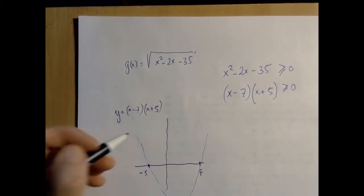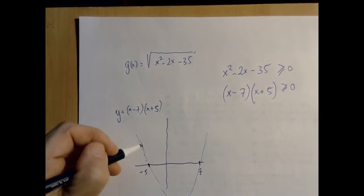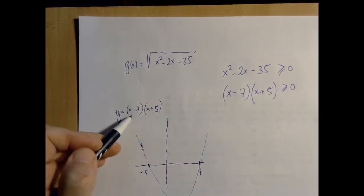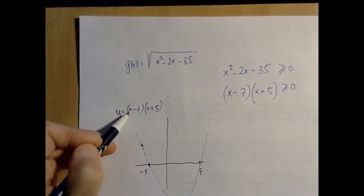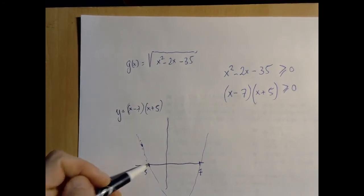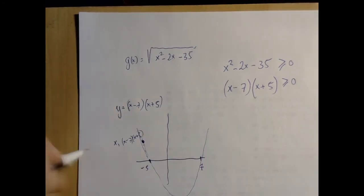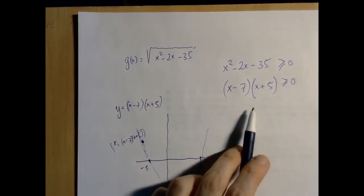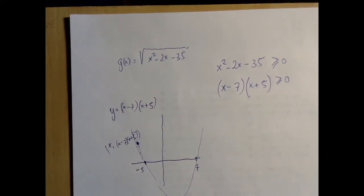And on this graph, for every x, the y coordinate is exactly this. So we're looking for the x values. So on this graph, the y coordinate is the expression that is the left-hand side of our inequality. So the question is for what,